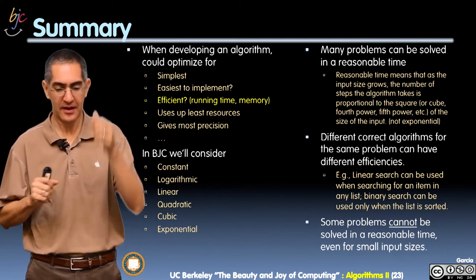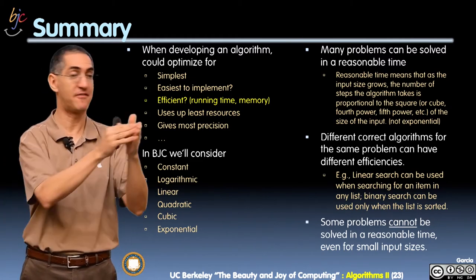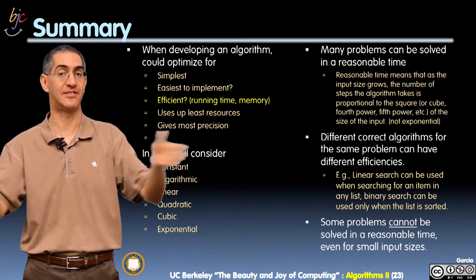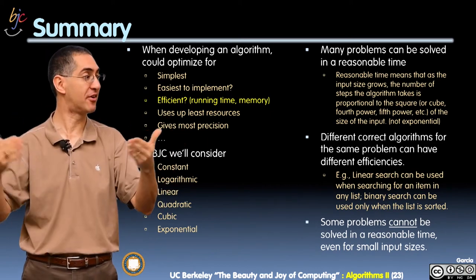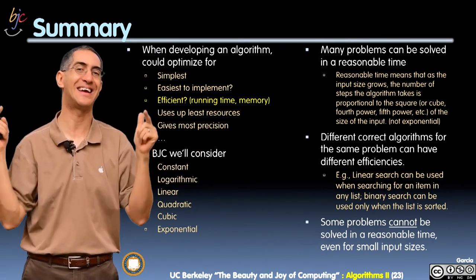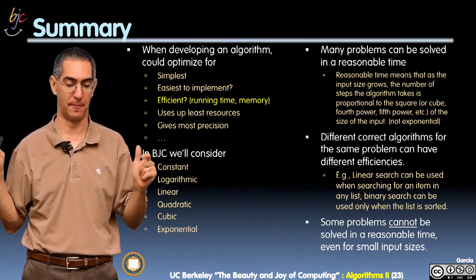Different correct algorithms for the same problem can have different efficiencies. We talked about finding a number in a list. You could have a very simple linear one, or a more clever logarithmic one, or if you have infinite storage, a constant time one. Different algorithms, different efficiencies for the same problem.